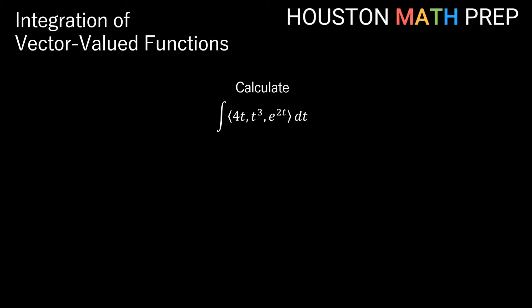So here we have the integral of the vector-valued function 4t, t cubed, e to the 2t, integrating dt. We're going to work this the way we might think it works, and then we'll offer a suggestion on a different way of writing the solution. If we just come along and integrate each piece, this is just a power rule. We'll have t squared, divide by 2, so we get 2t squared plus some constant.